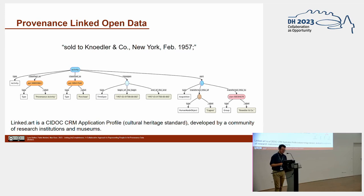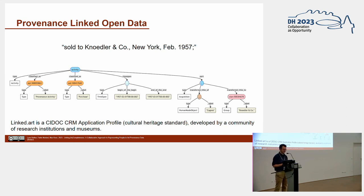Here you can see an example of a provenance event structured according to Linked Art. Linked Art is the data model we chose for structuring provenance in Linked Open Data. It is a CIDOC CRM application profile developed by a community of practitioners from museums and research institutions.